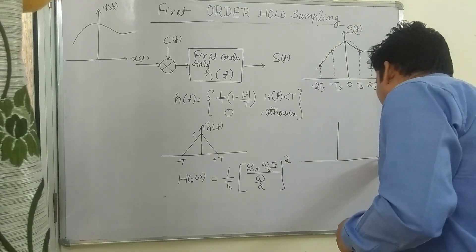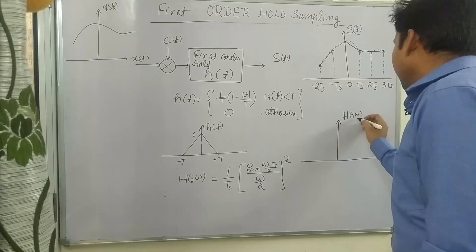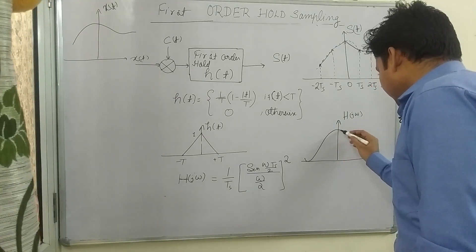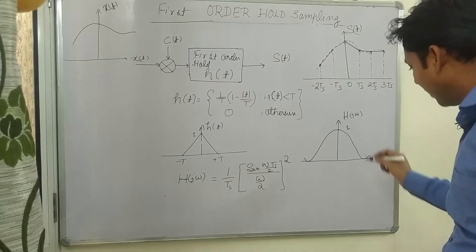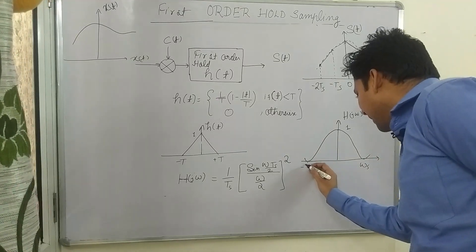H(ω) of the first-order hold I will draw here. It will be like this - that function will represent like this. The amplitude will be 1 at highest, this is ωs, this is minus